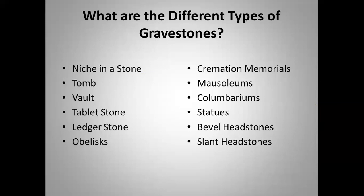What are the different types of gravestones? Some are types and some are features. You can have a niche in a stone — basically a place to put something, such as a photograph or, on Jewish headstones, a small niche for rocks. You have a tomb, a vault, a false tomb, a tablet stone, a ledger stone, obelisk, cremation memorials, mausoleum, columbariums, statues, bevel headstones, and slant headstones.